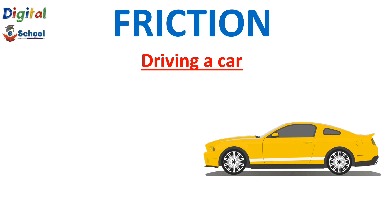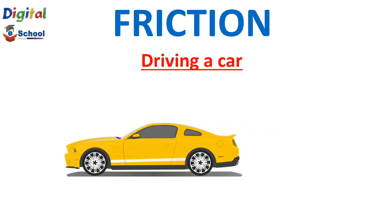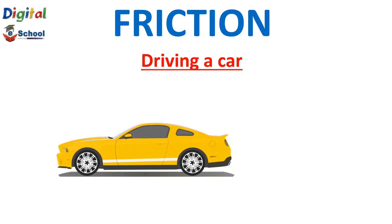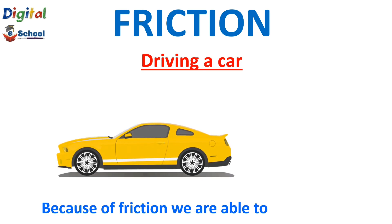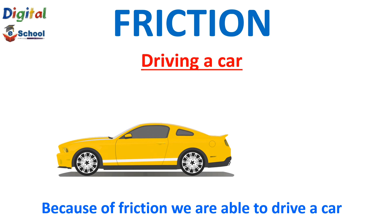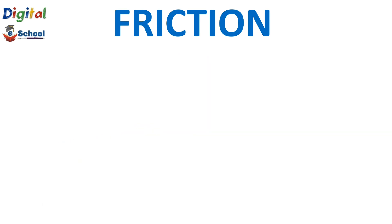The last advantage example is driving a car. We can drive a car because the friction force between the tire and the road provides grip for the car to move. That's why the car can move. If there were no friction between the tire and road, the car would not be able to move and we would not be able to drive.